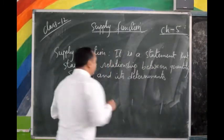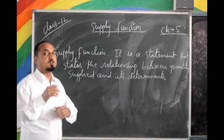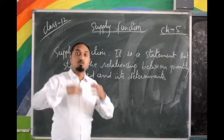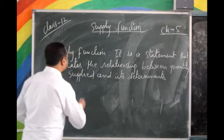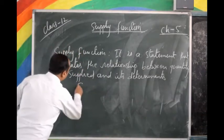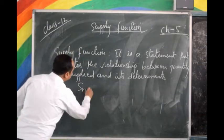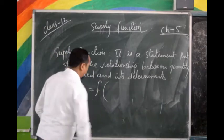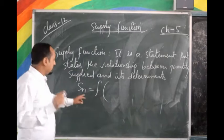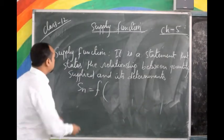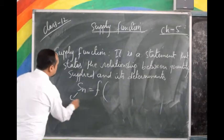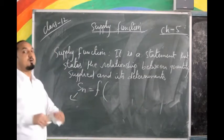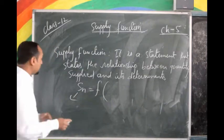Now I will write the supply function in a simple form. We write: S of N equals a function of its determinants. Here, S(N) means supply of commodity N — supply of commodity in items 1, 2, 3, 4, or whatever the items may be.